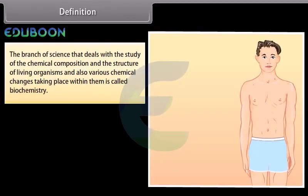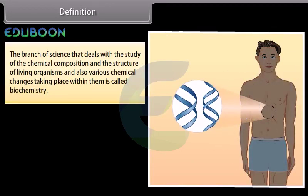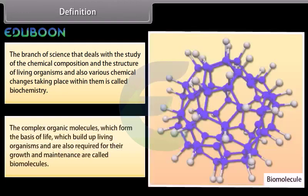The branch of science that deals with the study of the chemical composition and the structure of living organisms and also various chemical changes taking place within them is called biochemistry. The complex organic molecules which form the basis of life, which build up living organisms and are also required for their growth and maintenance, are called biomolecules.